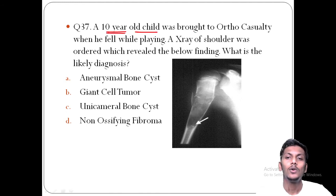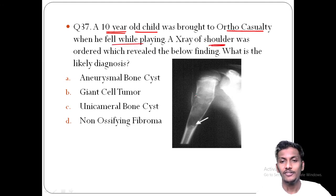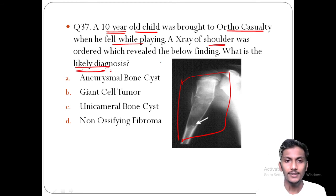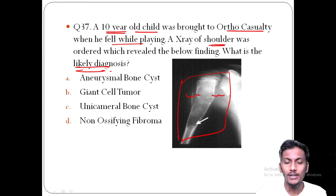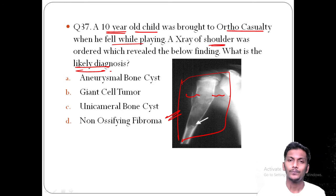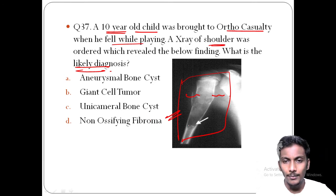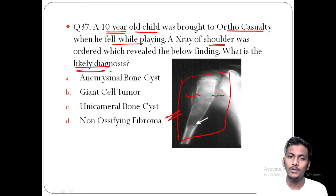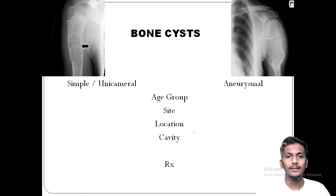Question 37: A 10-year-old child fell while playing; an x-ray of the shoulder revealed an incidental finding — the child was asymptomatic. The x-ray shows a cystic lesion with radiolucent fluid inside. The differential is between aneurysmal bone cyst and unicameral bone cyst. Unicameral bone cyst is common in the first decade of life; aneurysmal bone cyst is common in the second decade. The most common site for unicameral bone cyst is the proximal humerus or proximal femur. The most common site for aneurysmal bone cyst is the lower limb.